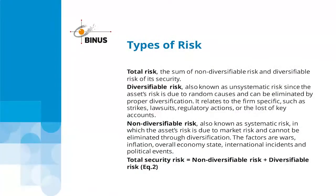There are three types of risk: total risk, diversifiable risk, and non-diversifiable risk. Total risk is the sum of non-diversifiable risk and diversifiable risk of a security. Diversifiable risk, also known as unsystematic risk, is due to random causes and can be eliminated through proper diversification. It is firm-specific — related to factors like laws, regulations, and loss of key accounts.